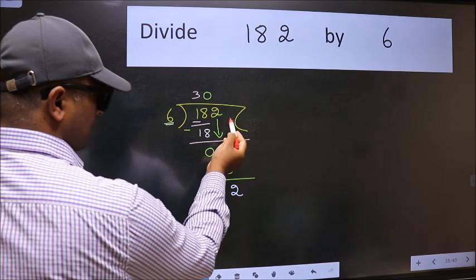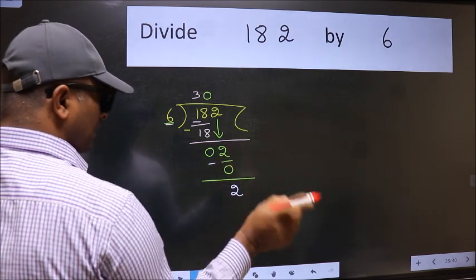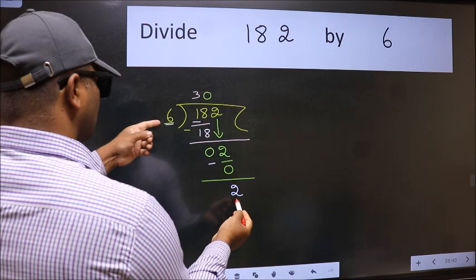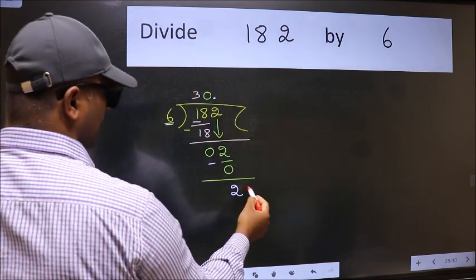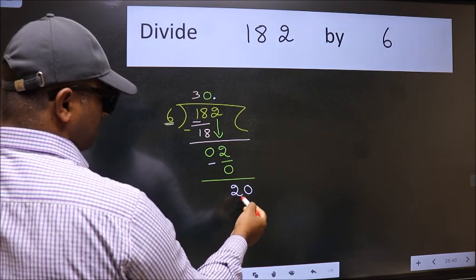Over here, we did not bring any number down, and 2 is smaller than 6. So now we can put a dot. Now we can put a dot and take 0. So, 20.